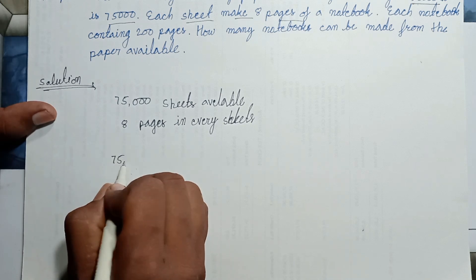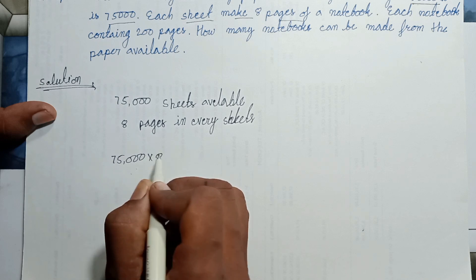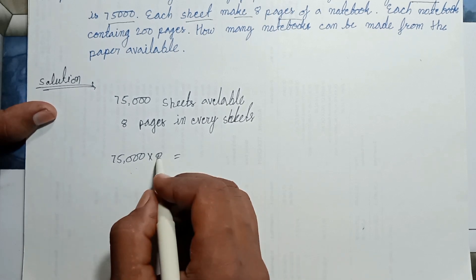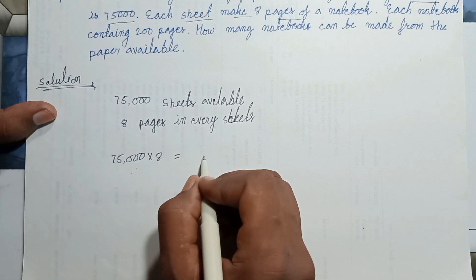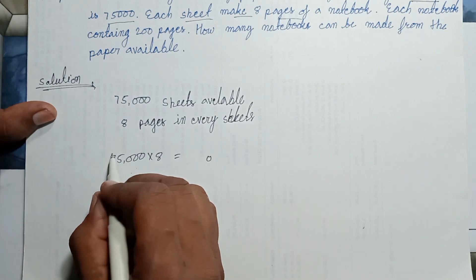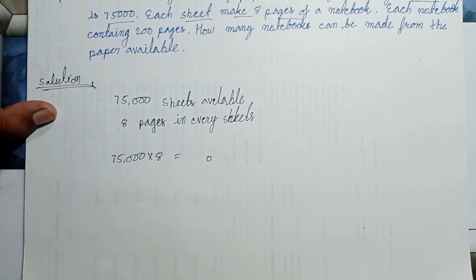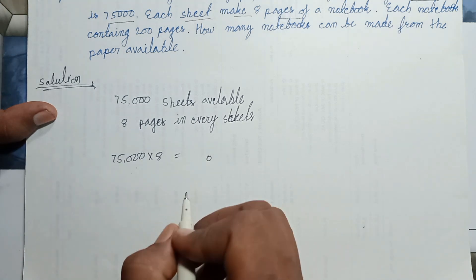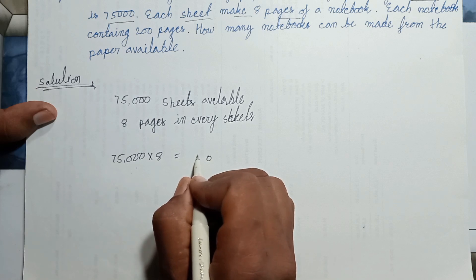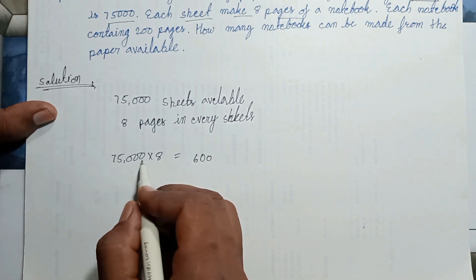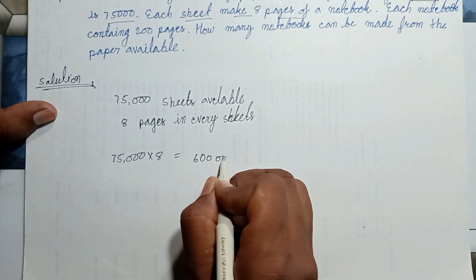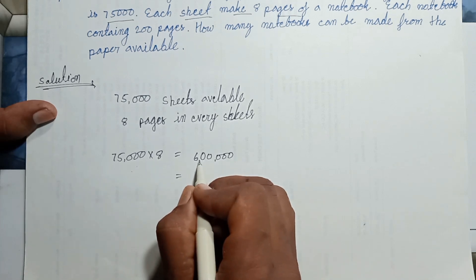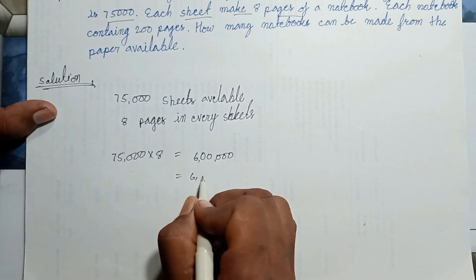75,000 multiplied with 8. 8 multiplied with 5 is 40, carry 4. 8 multiplied with 7 is 56, and 4 is 60. How many zeros? Three. Separate by comma: 6,00,000.